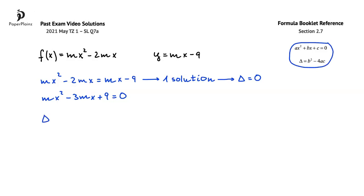So, we get that the discriminant is equal to b squared, and here b is negative 3m, so we get negative 3m squared minus 4 times a times c, so 4 times m times 9. Working further, we get 9m squared minus 36m. Factorizing gives us 9m multiplied by m minus 4, and as we explained earlier, this discriminant is equal to 0.